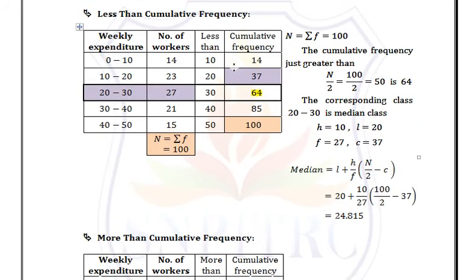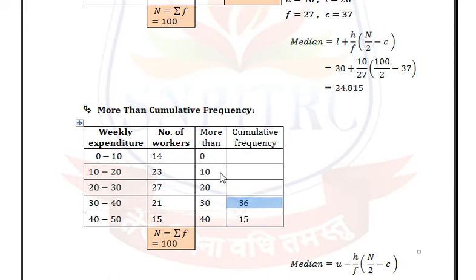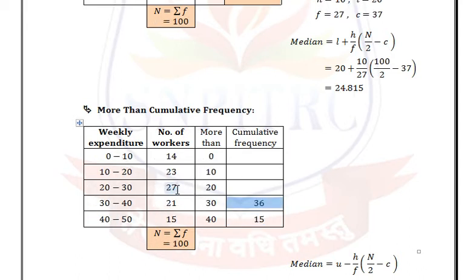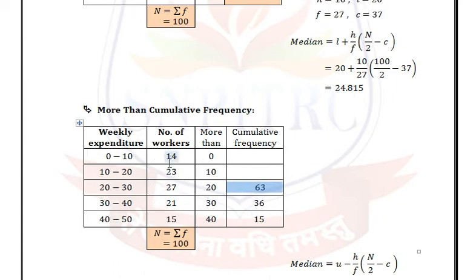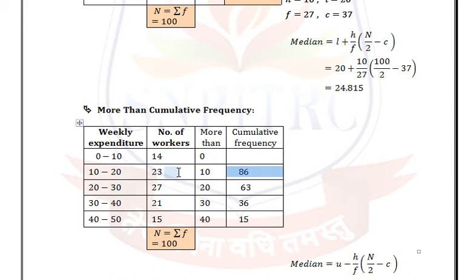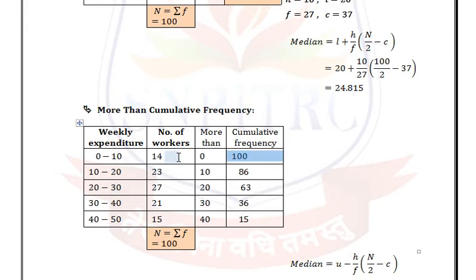Building the more than cumulative frequency from bottom: 15 (default), then 15 + 21 = 36, then 36 + 27 = 63, then 63 + 23 = 86, and 86 + 14 = 100.